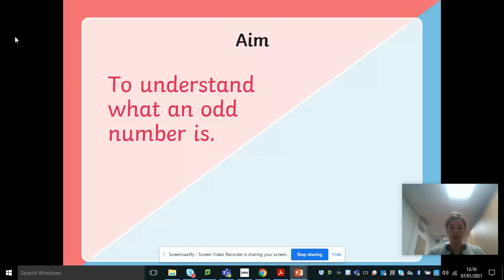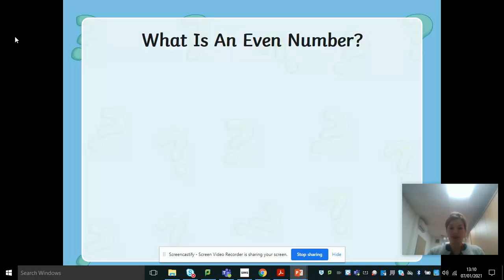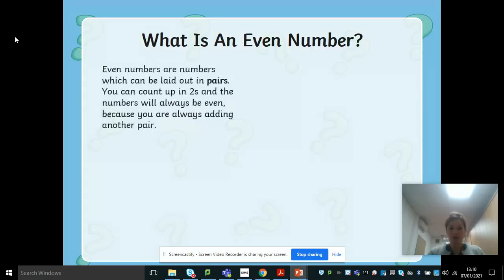So the aim is to understand what an odd number is and to understand what an even number is. So what is an even number? Even numbers are numbers which can be laid out in pairs. You can count up in twos and the numbers will always be even because you are always adding another pair.